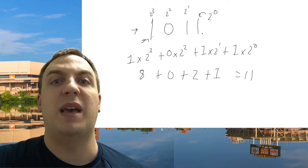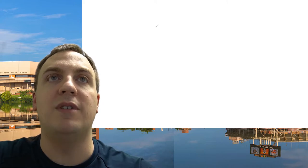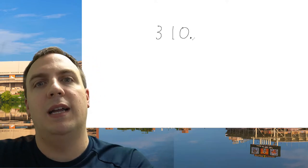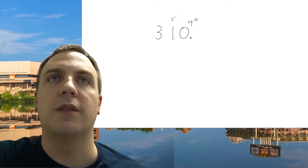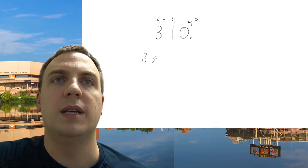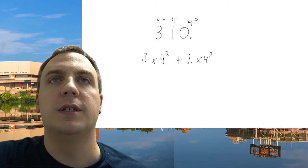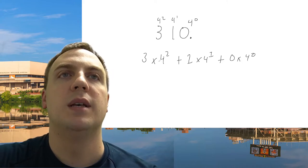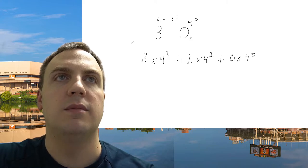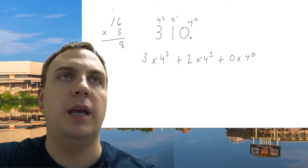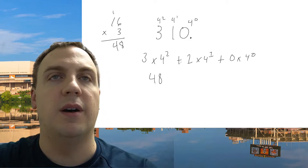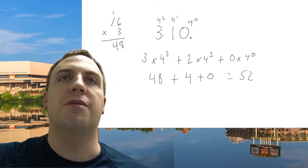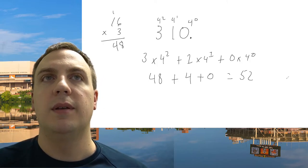Let's take base four. If it's base four, we have digits zero through three available. Let's take 3, 1, 0 in base four. Here's our decimal point — this is 4 to the zero, 4 to the first, and 4 squared. So it's 3 × 4² + 1 × 4¹ + 0 × 4⁰ = 3 × 16 + 1 × 4 + 0 = 48 + 4 = 52. So 310 in base four is the value 52 in base 10.